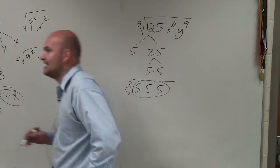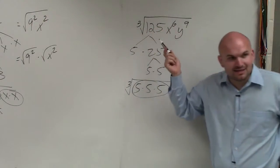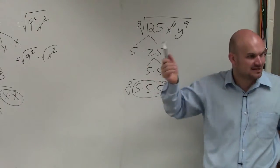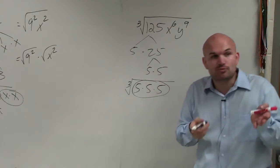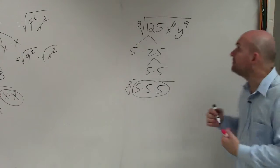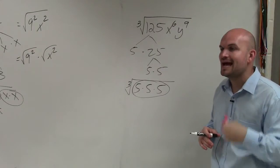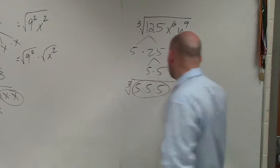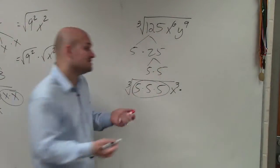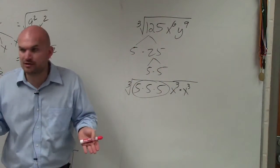Here's where I'm going to change my approach. Rather than prime factorizing x to the 6th as x times x times x times x times x times x, I can take the cube root of x to the third. So what I'm going to do is rewrite x to the 6th as x to the 3rd. How many times do I need to multiply x to the 3rd to give me x to the 6th? I just need to multiply it twice — x cubed times x cubed gives me x to the 6th.